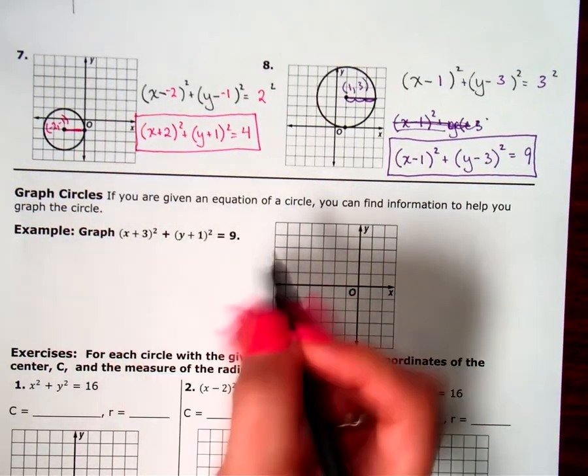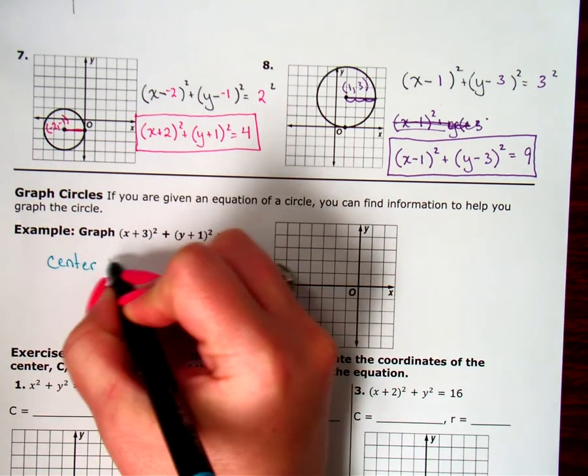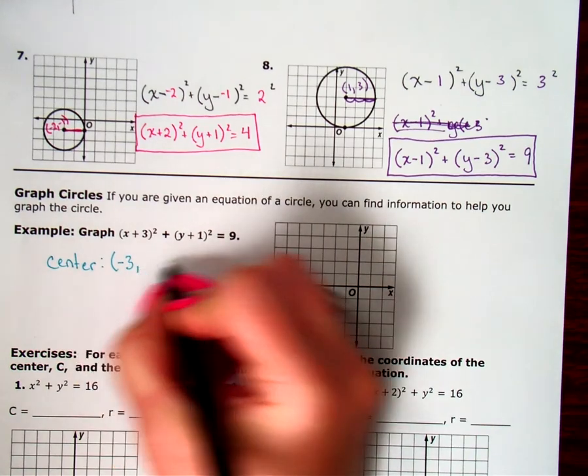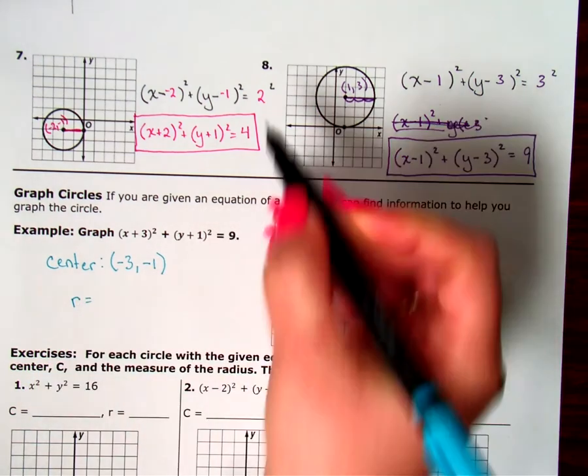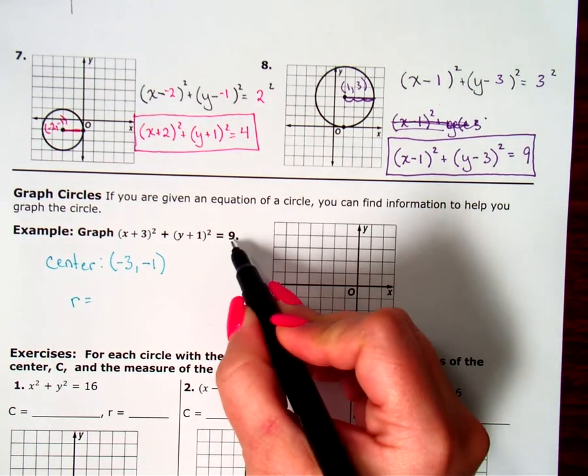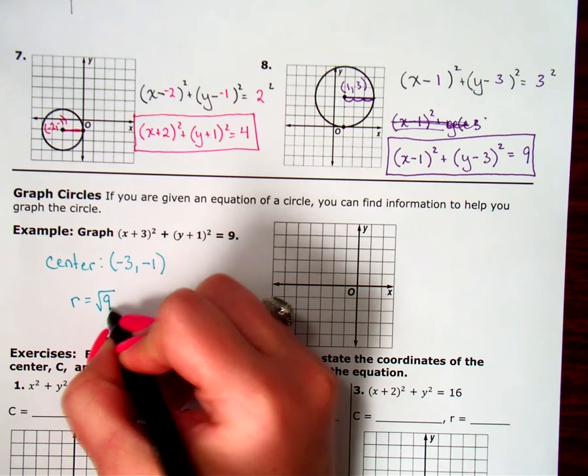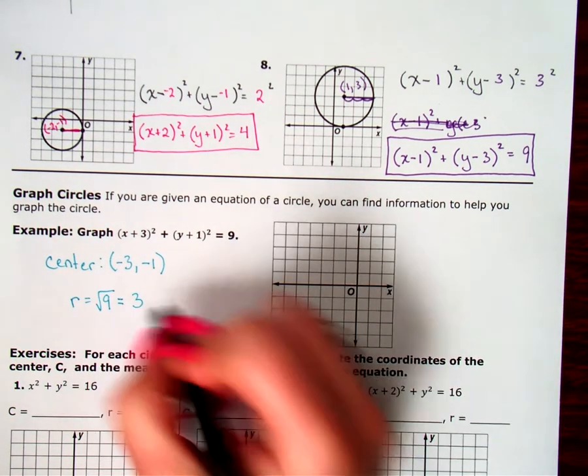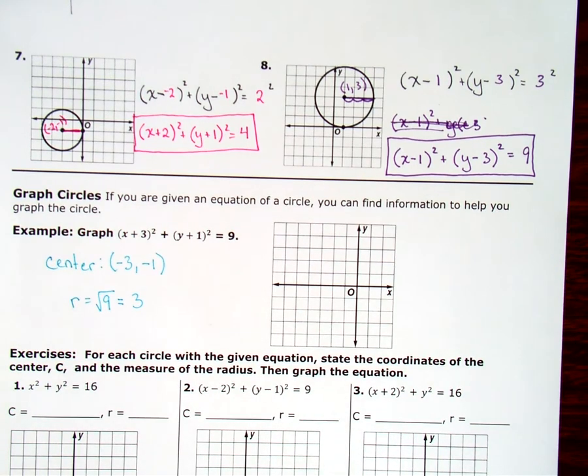When I look here, I know that this is really, for my center, the opposite of 3 and the opposite of 1. And for my radius, this is the radius squared, and we know to unsquare something, squares and square roots cancel out. So to unsquare this, I have to square root that number. And the square root of 9 is 3. My center is negative 3, negative 1. My radius is 3.